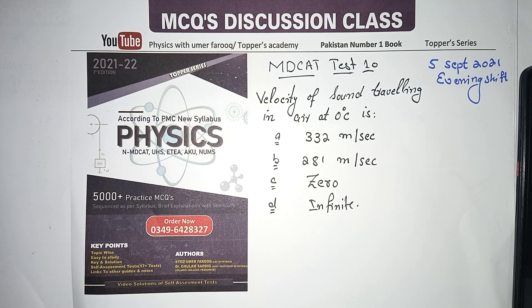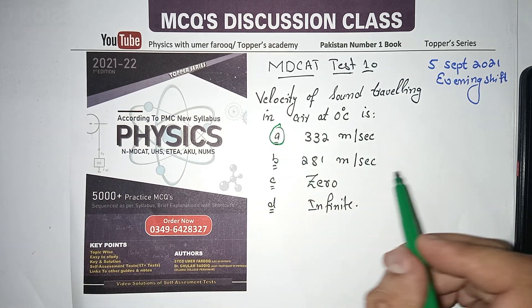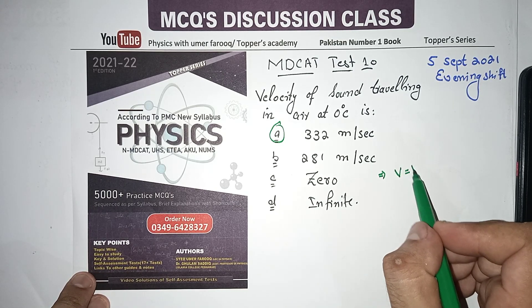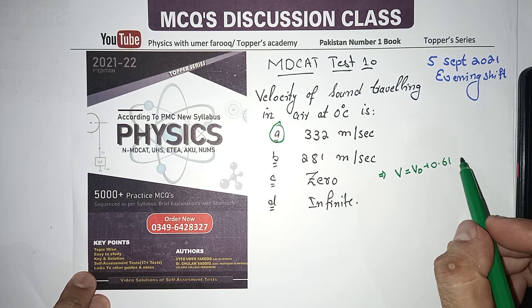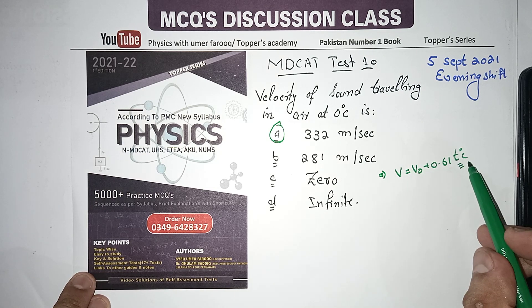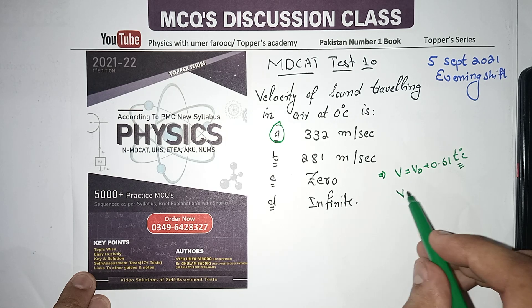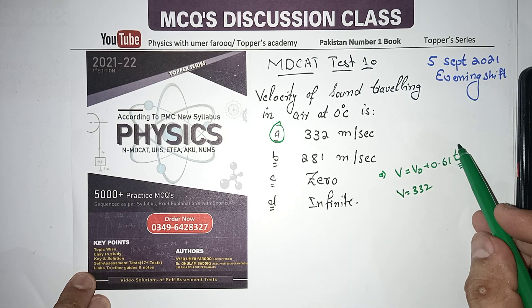So at 0°C, the velocity is 332 m/s. Using the formula: v = v₀ + 0.61 × T (°C). At T = 0, multiplying by zero gives zero, so v = 332 m/s.